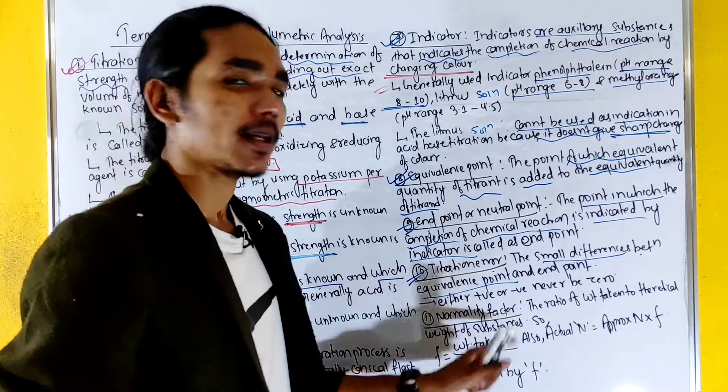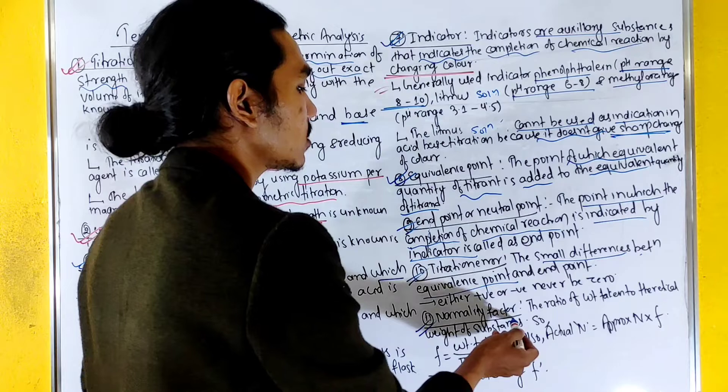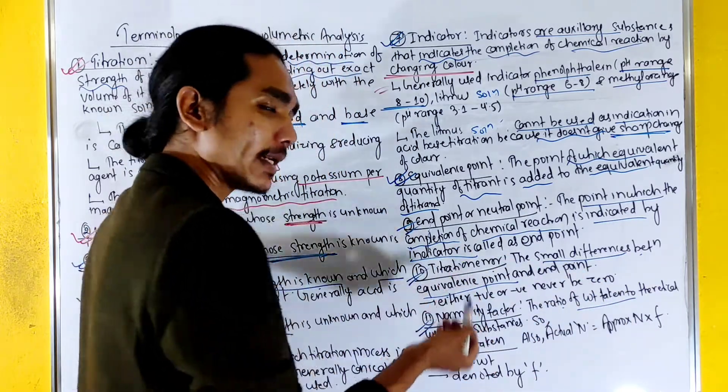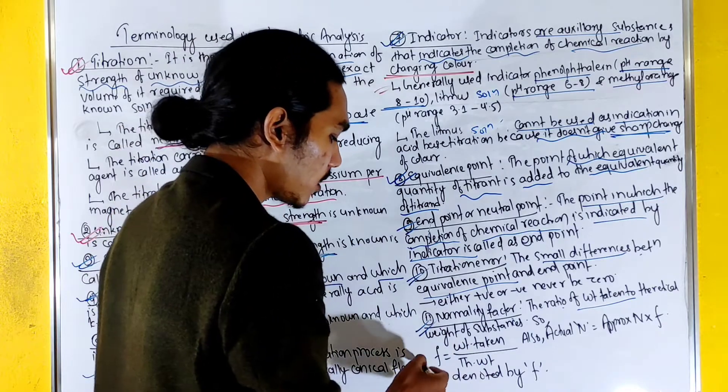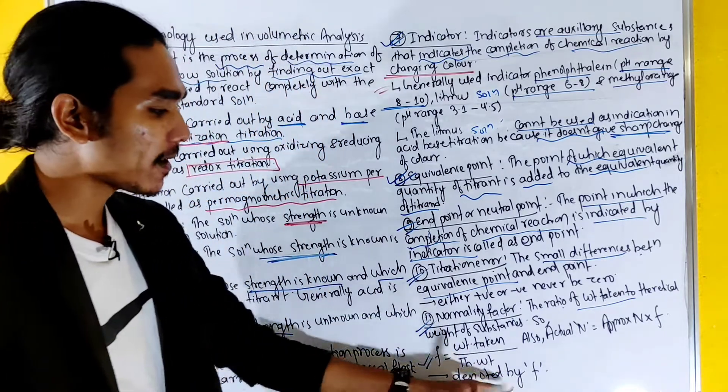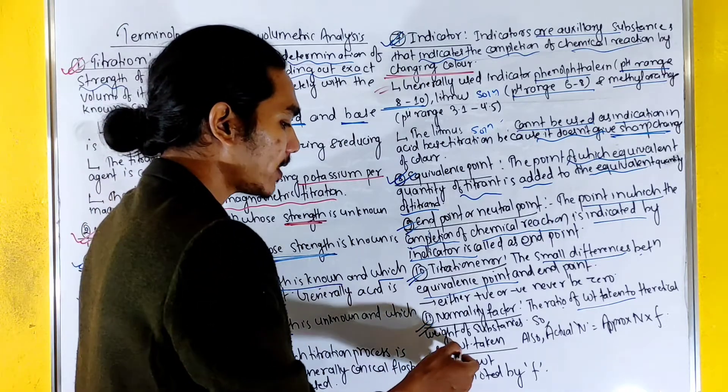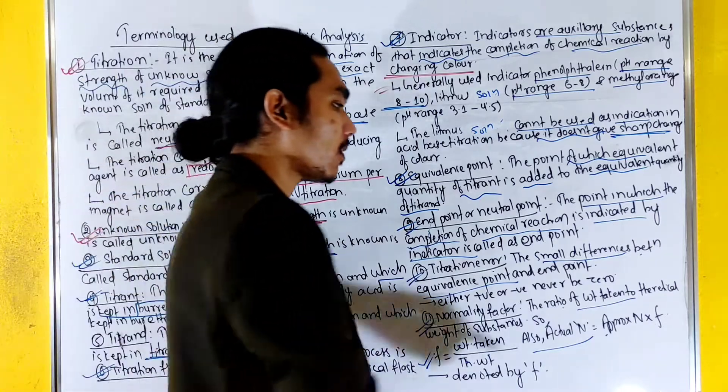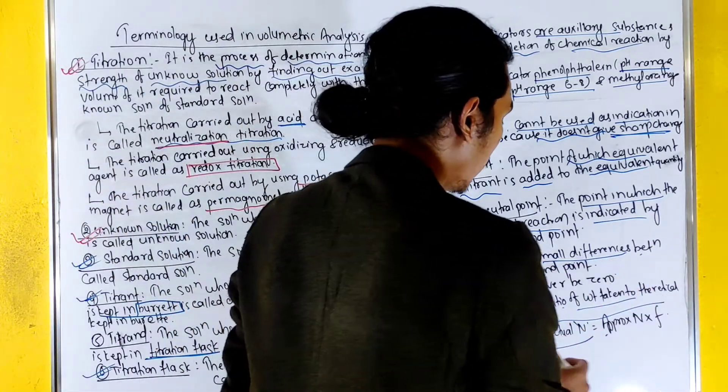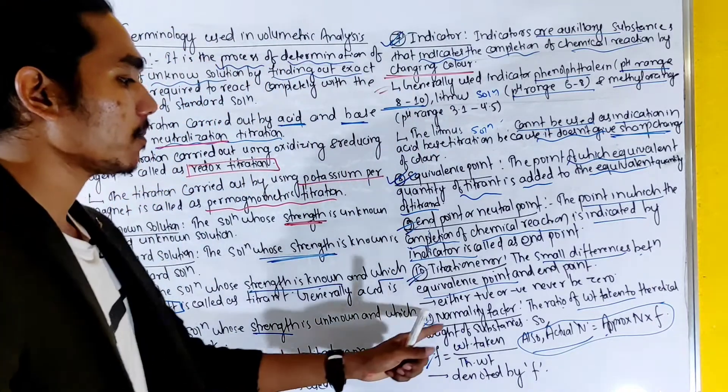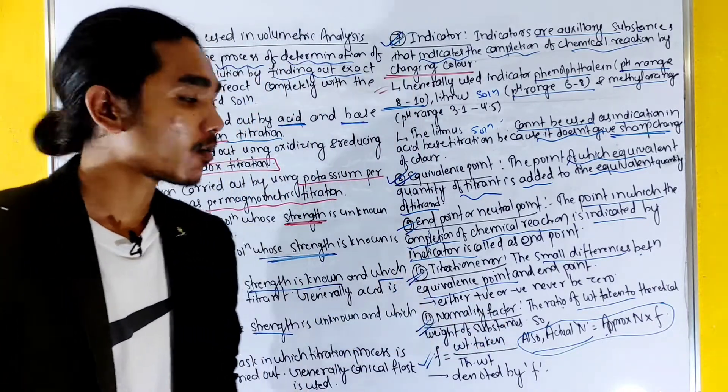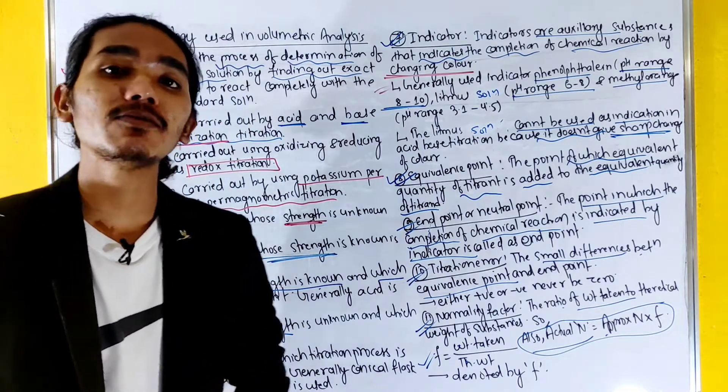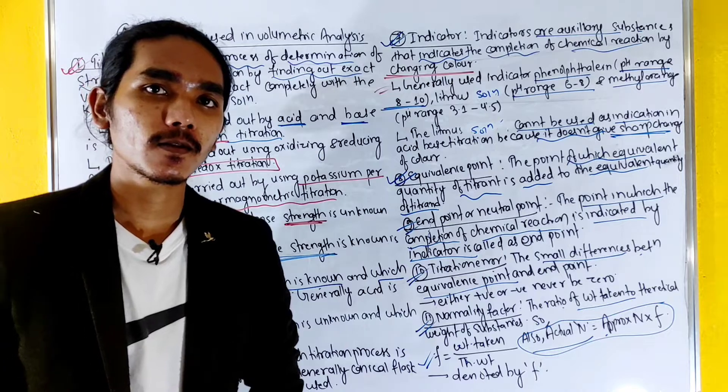Normality factors: ratio of weight taken to the theoretical weight is known as normality factors. Generally, we can represent it with small f denoted by the theoretical weights. So actual normality we can calculate as N into f.